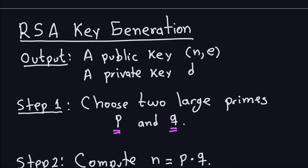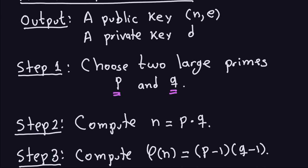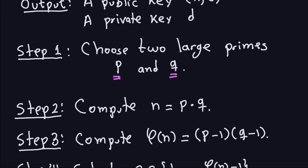Step 1: choose two large primes — that's why we study prime numbers, because they are an important component of RSA. By large, it means really really large. Step 2: compute the product of those two primes; that product will be the number N, part of the public key. N in RSA is always a product of two large primes.